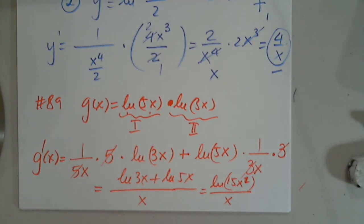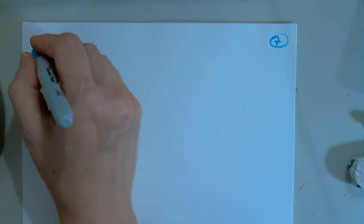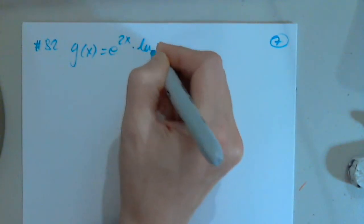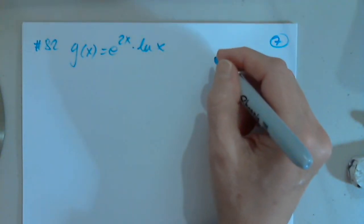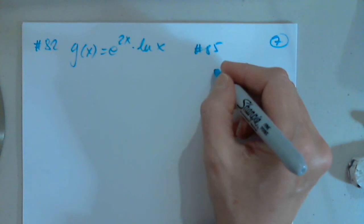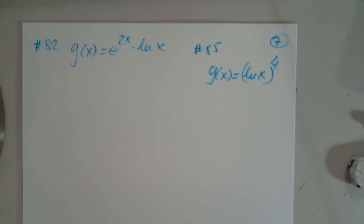Before we look at word problems, let's see if we want to look at anything else. 82. 82 it is. Which one? Good. And also, I would like to look at 85. So 82 and 85. 82 you said. G of x, e to 2x times natural log x. And I also picked 85. And is g of x equals natural of x to the fourth power. Perfect. Okay. So let's start with 82.